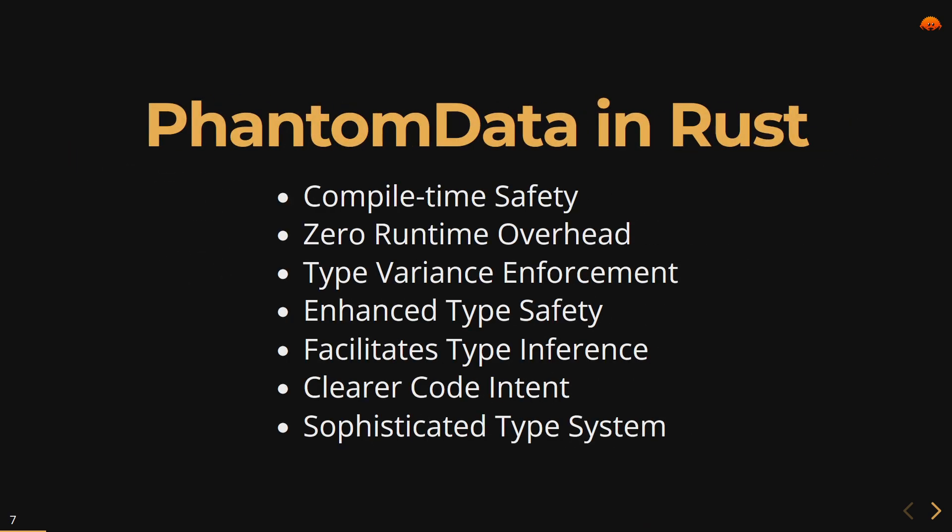To conclude, the advantages we get when using PhantomData in our Rust code include: compile-time safety, zero runtime overhead, type invariance enforcement, enhanced type safety, facilitated type inference, clear code intent, and sophisticated type systems. PhantomData allows developers to enforce ownership and lifetime relationships at compile time, specifying constraints without introducing runtime errors. As a zero-size type, PhantomData does not consume any memory at runtime, making it an efficient tool for conveying type information without impacting performance.